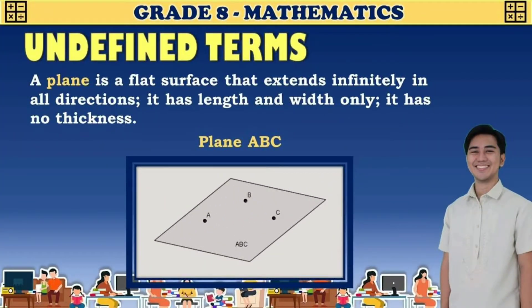The third undefined term is a plane. A plane is defined as a flat surface that extends infinitely in all directions. It has length and width only — it has no thickness. In our example, this is plane ABC, named using the three points that lie on the same plane.